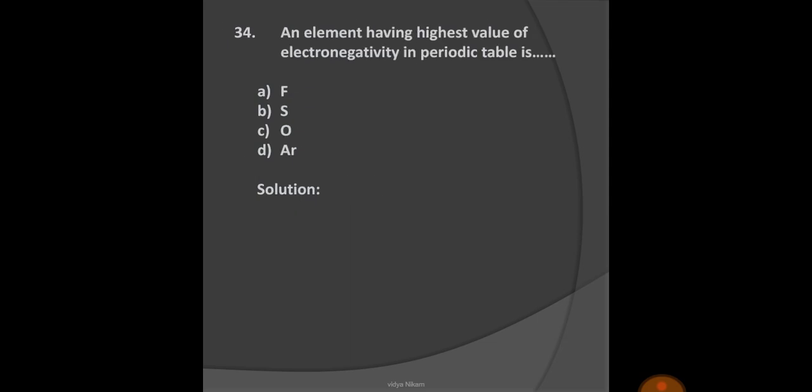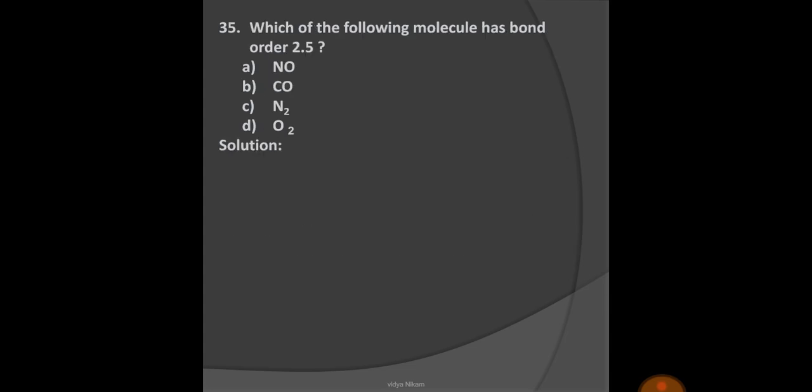Next question: An element having highest value of electronegativity in periodic table is? Options: A) Fluorine, B) Sulfur, C) Oxygen, D) Argon. We know that electronegativity increases from left to right and decreases from top to bottom in periodic table, and fluorine is the most electronegative element. Option A is the right option.